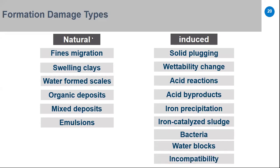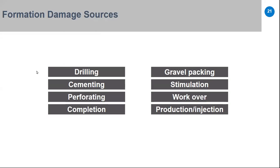Sources of formation damage exist in every phase of the well life cycle. Drilling operations cause some damage; cementing, perforating, and completion fluids all contribute. Gravel packing typically induces some damage. Stimulation itself can cause damage if not designed and executed correctly. Workover operations, production, and injection also cause formation damage.